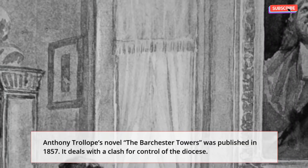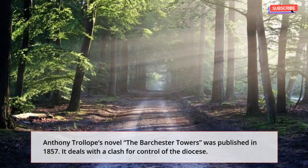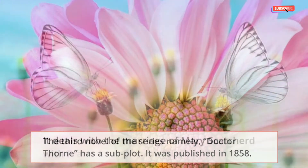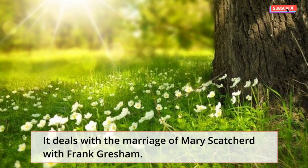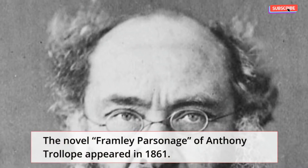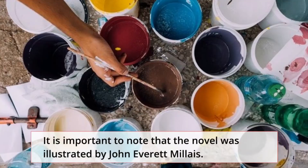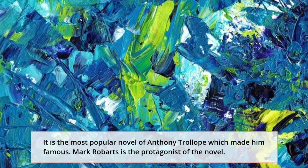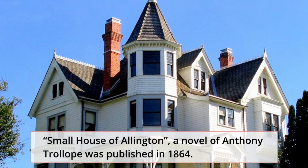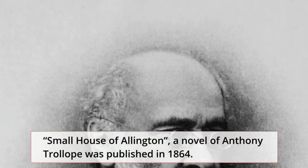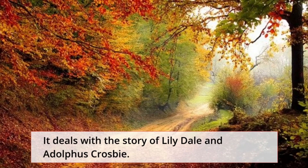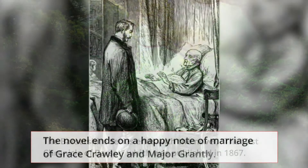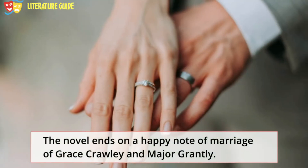Barchester Towers was published in 1857 and deals with a clash for control of the diocese. The third novel, Dr. Thorne, was published in 1858 and deals with the marriage of Mary Scatcherd with Frank Gresham. Framley Parsonage appeared in 1861, illustrated by John Everett Millais, and is the most popular novel of Trollope — the one that made him famous, with Mark Robarts as the protagonist. The Small House at Allington was published in 1864 and deals with the story of Lily Dale and Adolphus Crosbie. The series ends with The Last Chronicle of Barset, published in 1867, ending with the marriage of Grace Crawley and Major Grantly.